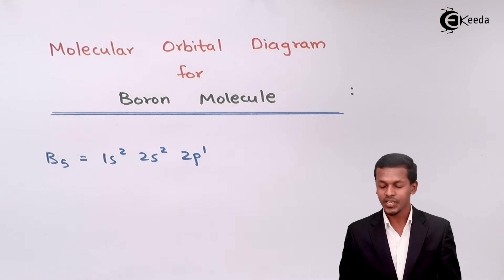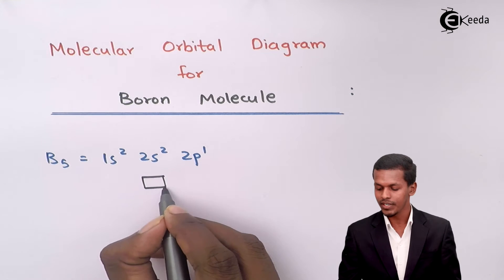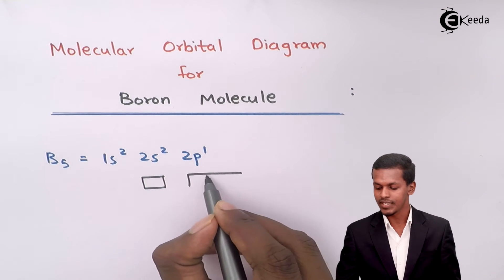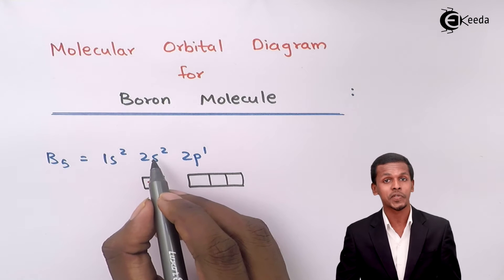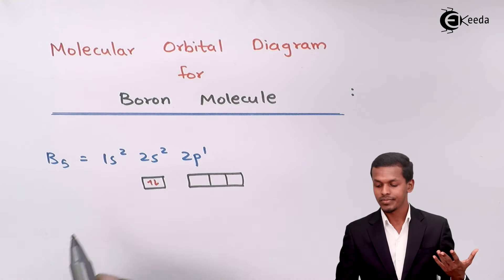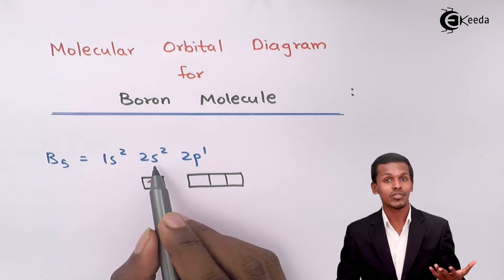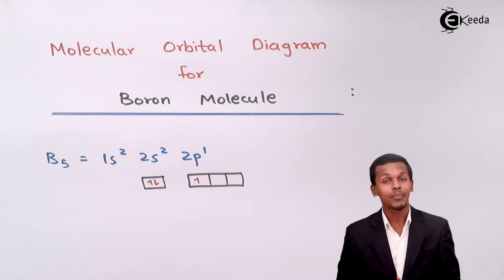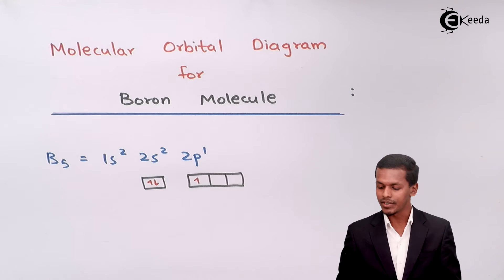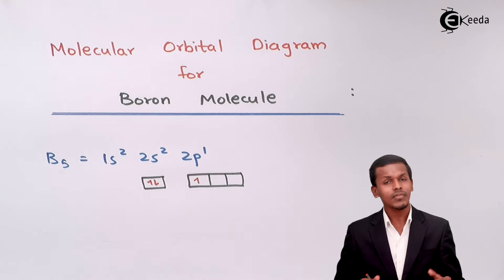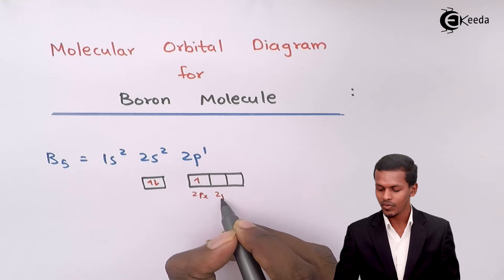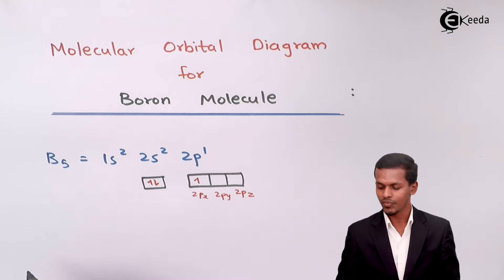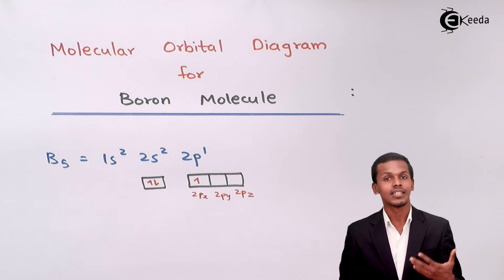The s subshell consists of only one orbital, while the p subshell consists of three orbitals. There are two electrons present in the 2s orbital, and one electron present in the 2px orbital. We can represent the three p orbitals as 2px, 2py, and 2pz.